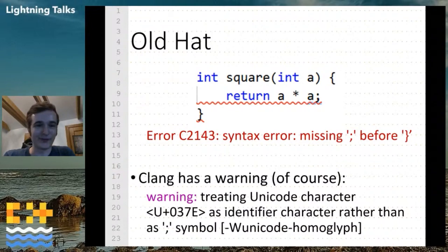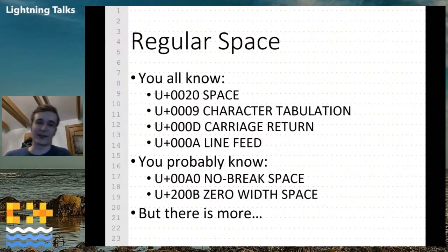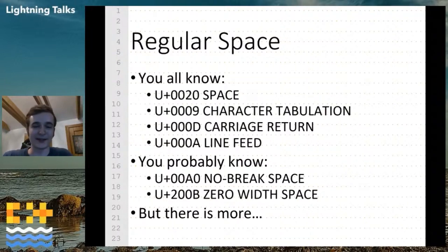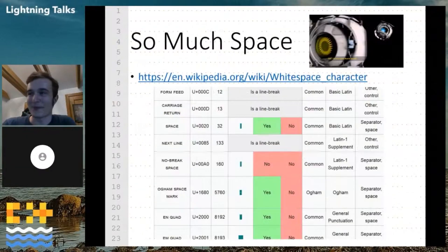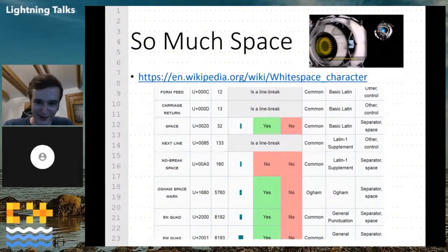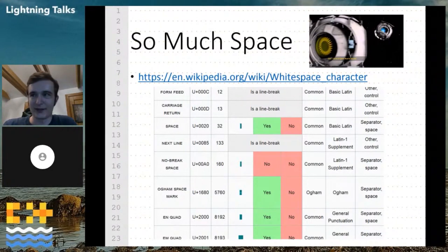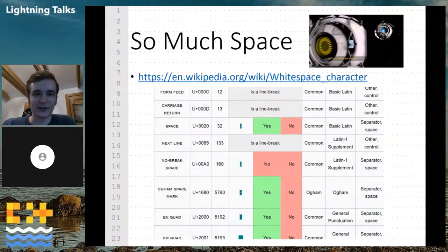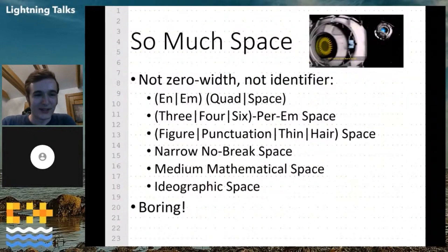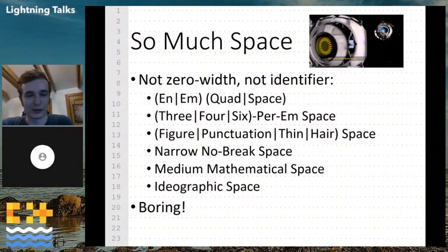But that's old news. What other fun stuff can we do? So you all know your regular space characters: space, tab, CRLF, and you probably also know no-break space and zero-width space. But there's more — in fact, a lot more. You can go to Wikipedia for a comprehensive list of all the Unicode whitespace characters and all their different properties. The ones I listed here are not zero-width and cannot be used in identifiers, pretty much like normal space. But that's pretty boring.